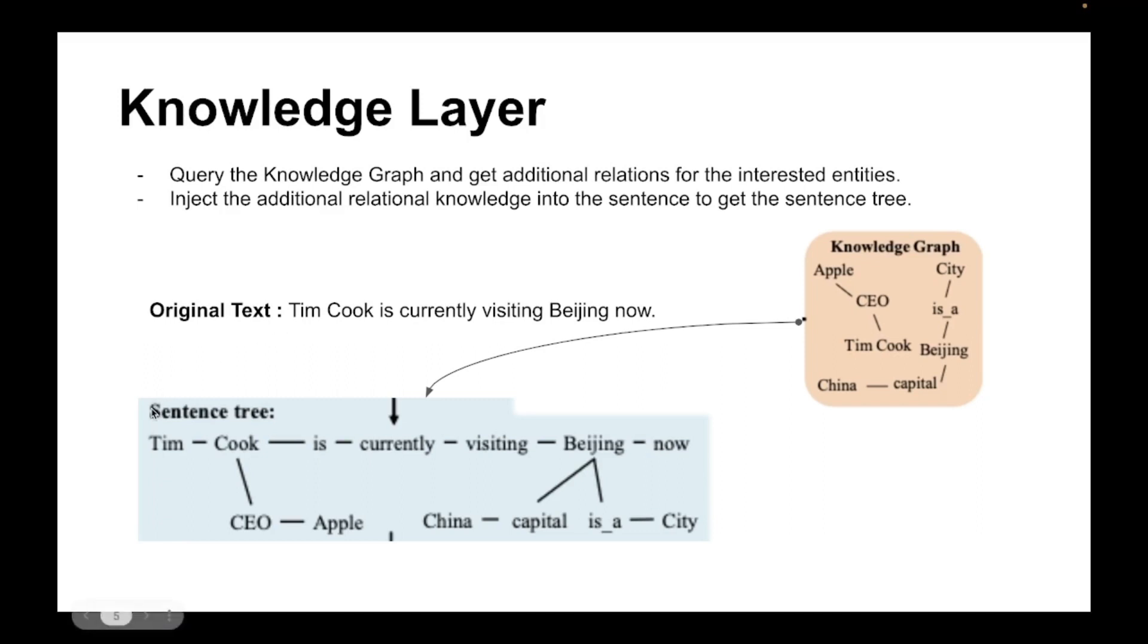Then it becomes something like this which is called a sentence tree. Why is it called a sentence tree? Because it's no longer a sequence of words. Now it's in the form of a tree structure. So you have Tim Cook, CEO of Apple is like a branch. He is currently visiting Beijing and Beijing is capital of China, Beijing is a city. These are the different relations attached to it.